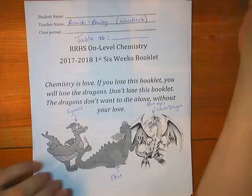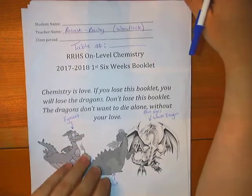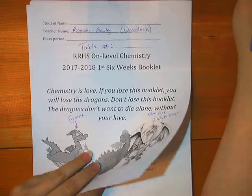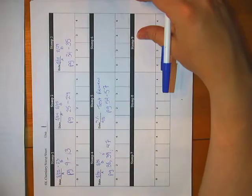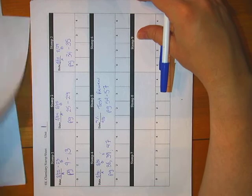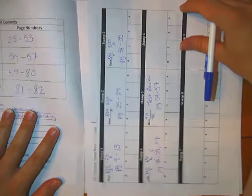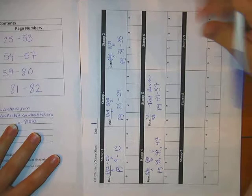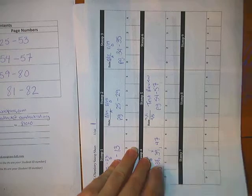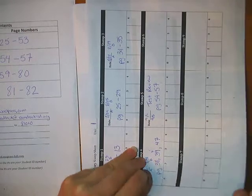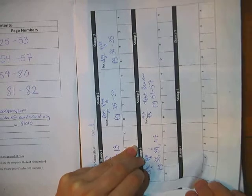All right folks, hello and welcome to Unit 2. Let's open your books first to your stamp page. Now I know that in your book it looks like this — this is our Unit 1 stamp page. We need the Unit 2 stamp page, which is a new one.